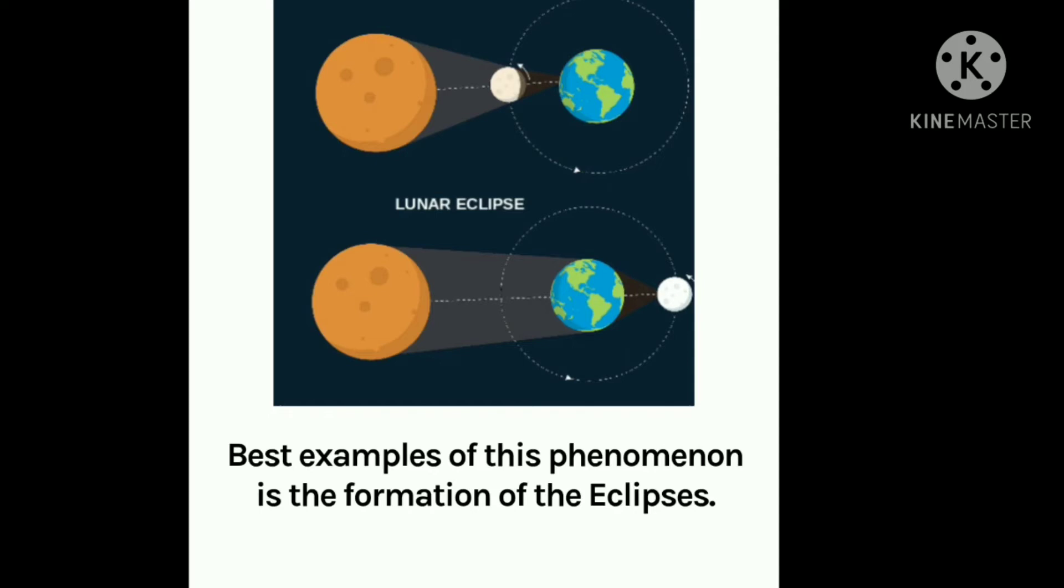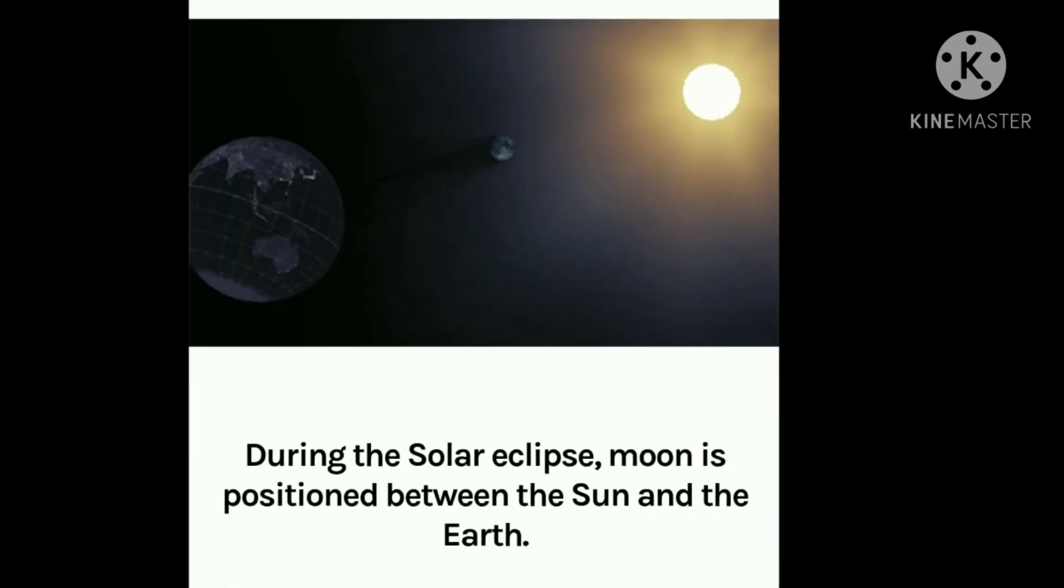So you are aware of the solar eclipse and the lunar eclipse. In solar eclipse, there is the moon in between the sun and earth, and in lunar eclipse, there is the earth in between the sun and the moon. But all three should be in a straight line.